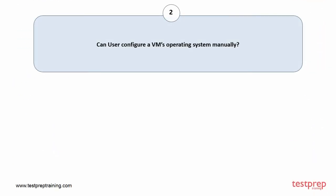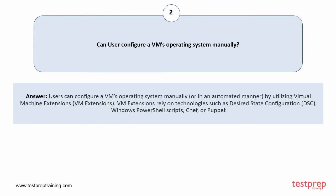Question number two: Can a user configure a VM's operating system manually? Users can configure a VM's operating system manually or in an automated manner by utilizing virtual machine extensions. VM extensions rely on technologies such as desired state configuration, Windows PowerShell scripts, Chef, or Puppet.